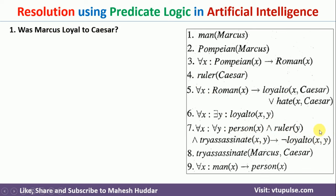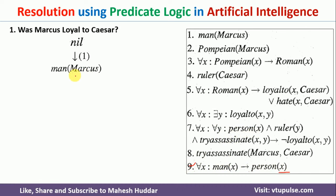Now we will start with the empty premises — that is nil — and then continue by selecting one of the premises. We want Marcus, so I will select man(Marcus) as the first one. But looking at the 7th premise, we don't want man, we want person. Looking at the 9th premise, it says if x is a man then x is a person. So man(Marcus) gets converted into person(Marcus).